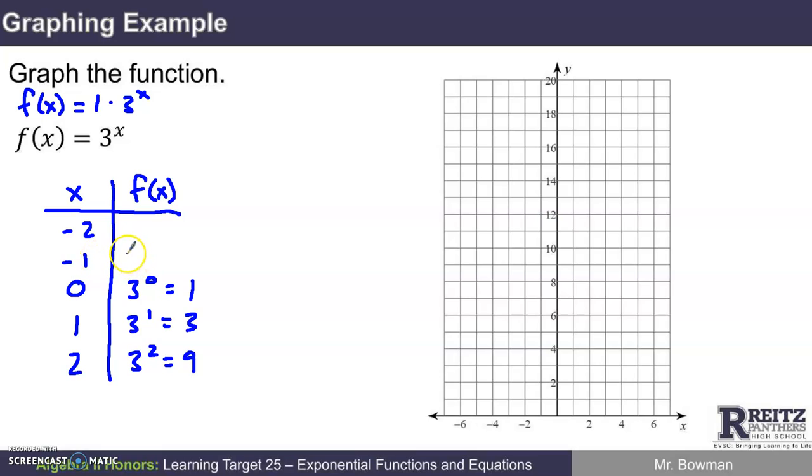If x is negative one, I've got three to the negative first power. What you need to remember about negative exponents is that's the same as one over the number with a positive exponent. So three to the negative first is one over three to the first, or one third. And three to the negative second is one over three squared, which is one over nine.